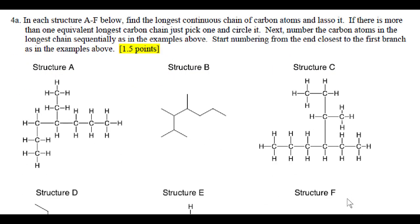So in question 4a, it asks, for each structure below A through F, find the longest continuous carbon chain of atoms. If there's more than one equivalent longest carbon chain, just pick one and circle it. Next, number the carbon atoms in the longest carbon chain sequentially, just like you did in the examples above, starting from the end of the chain that's closest to the first branch point, and then compare them. So what I'll do with you is go through a couple of these, and then the rest you can do on your own.